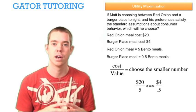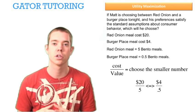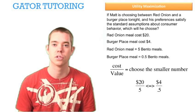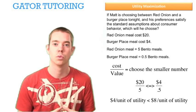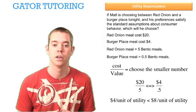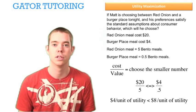We have Red Onion: $20 divided by 5 units of utility — is that less than, equal to, or greater than the Burger Place: $4 divided by 0.5 units of utility? We do the algebra and see that the Red Onion costs us $4 for our next unit of utility, which is less than the Burger Place at $8 per unit of utility. So we choose the Red Onion.